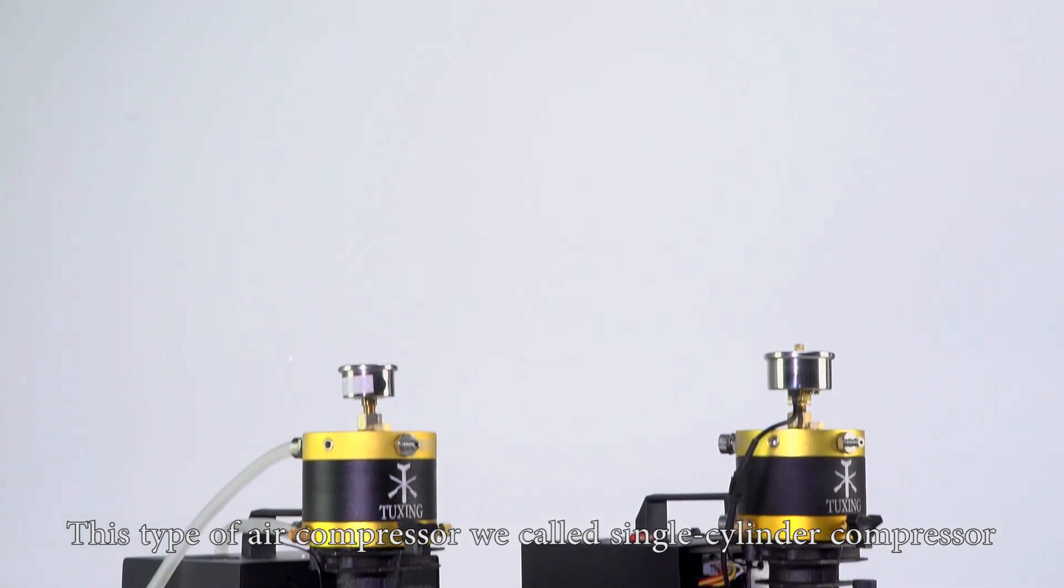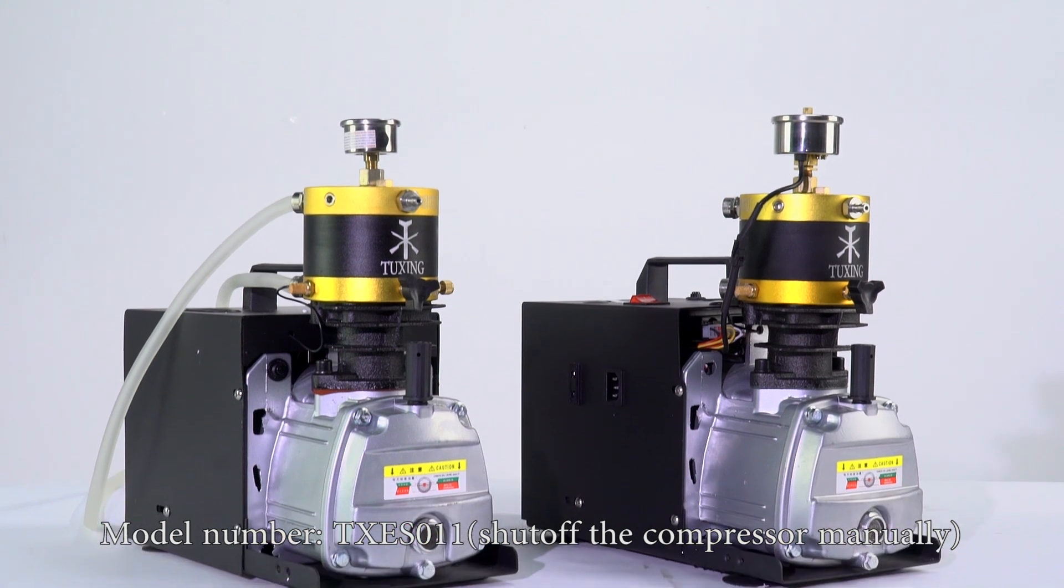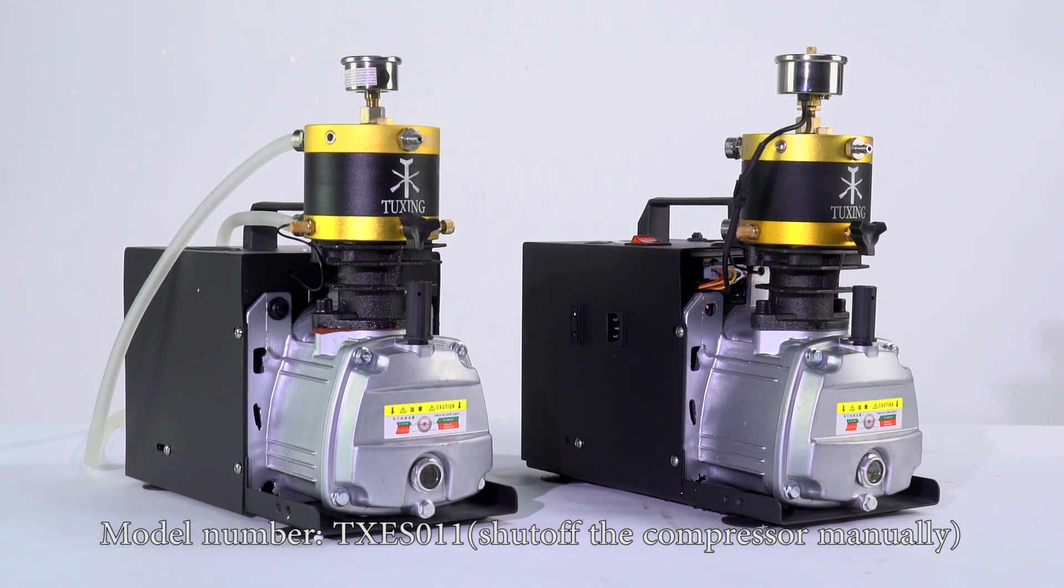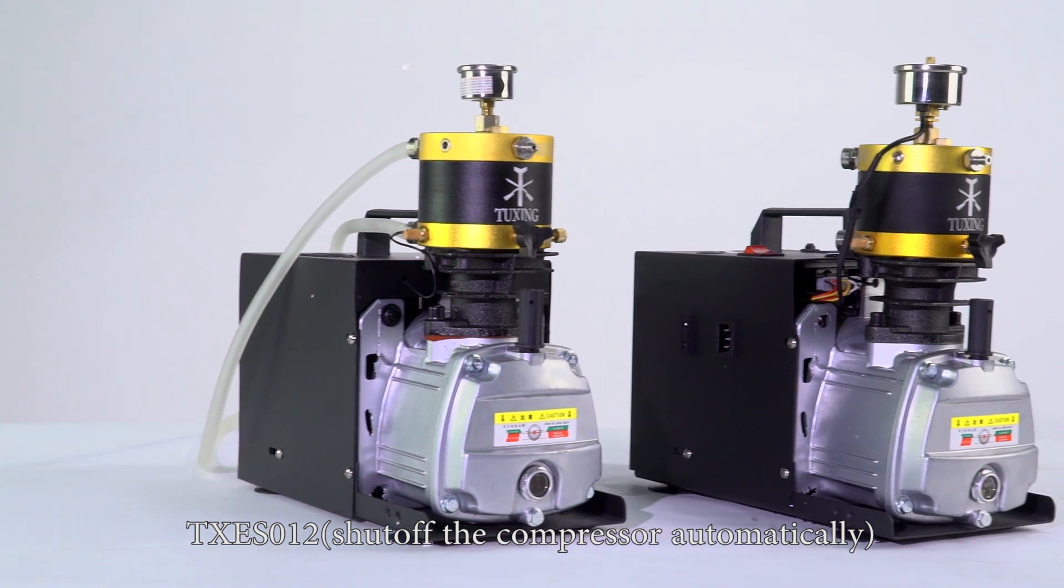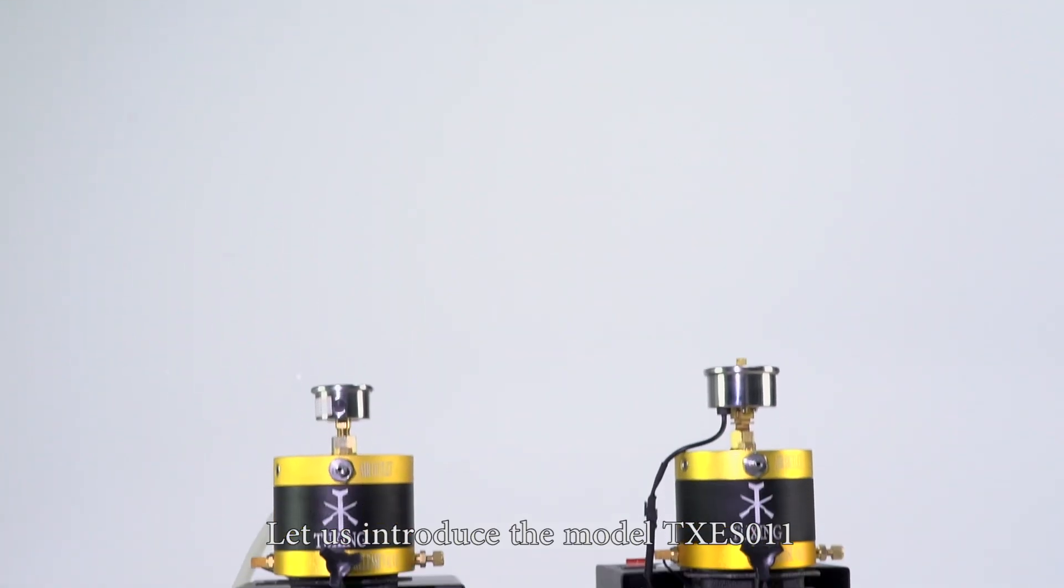This type of air compressor we call single cylinder compressor. Model number TXES011 shuts off the compressor manually. TXES012 shuts off the compressor automatically. Let us introduce the model TXES011.